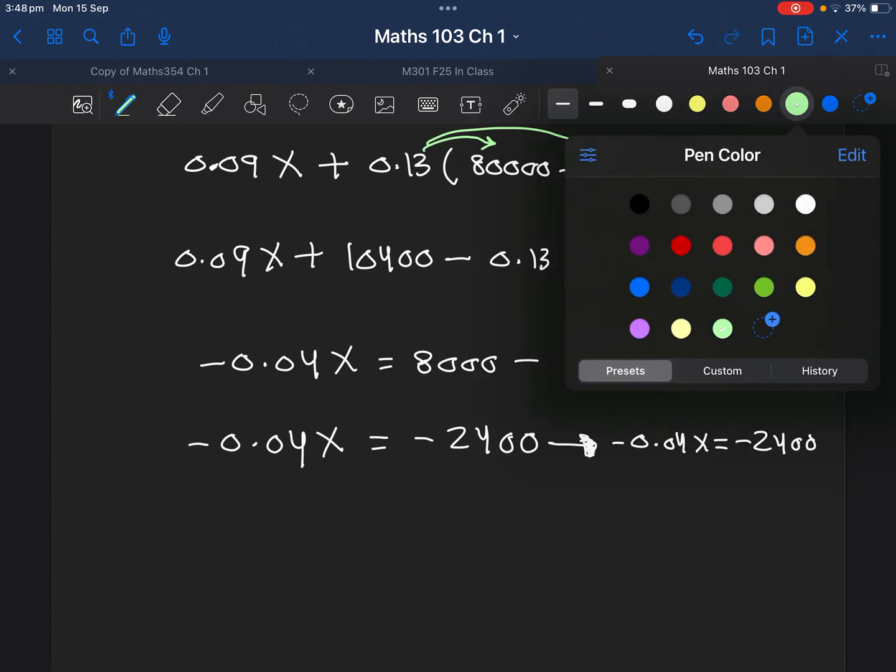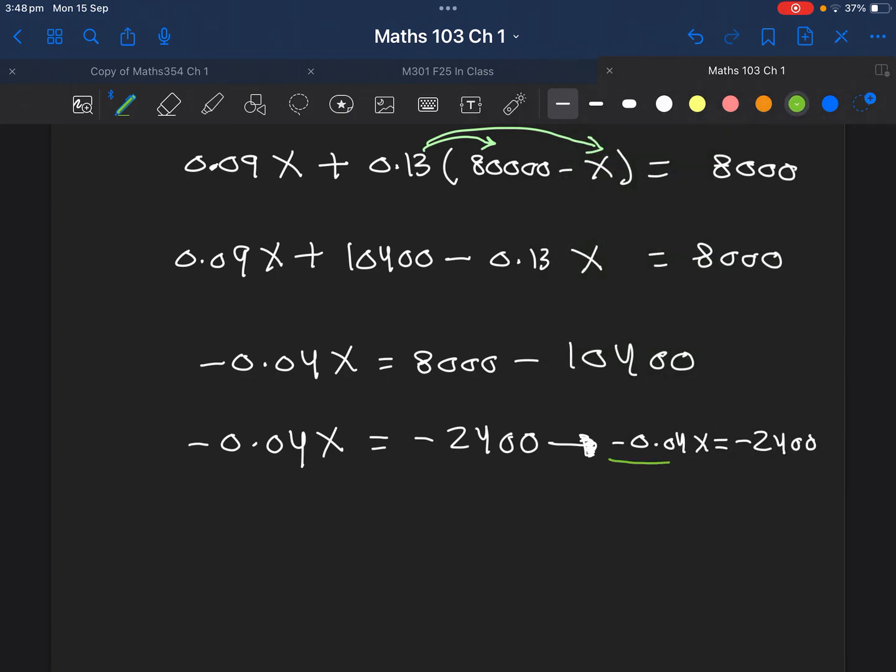What we need to do next is divide everything by the number that is with X. So we divide by negative 0.04 on both sides. We have cancellation, so we just get X. If we write this in the calculator, the answer will be 60,000. You need to put the sign of the dollars.